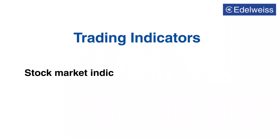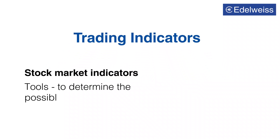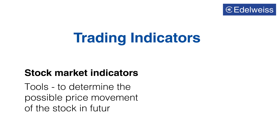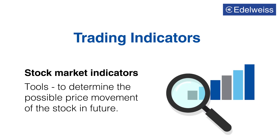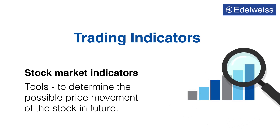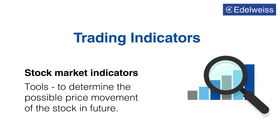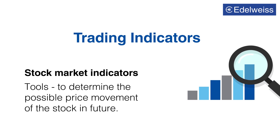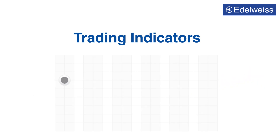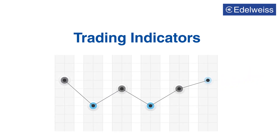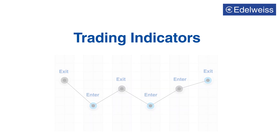Hello everyone. Stock market indicators are tools used by technical analysts in order to determine the possible price movement of the stock in future. With these indicators, technical analysts can make decisions about when to enter or exit a trade in the market. So in this video, let us understand trading indicators in detail.